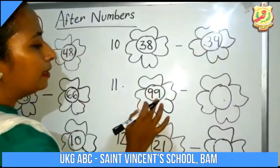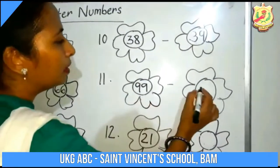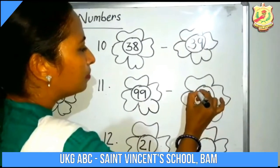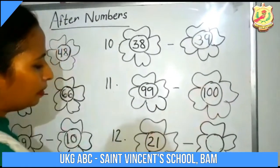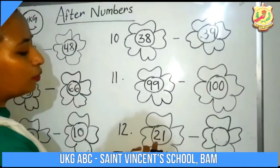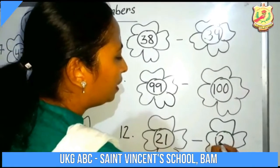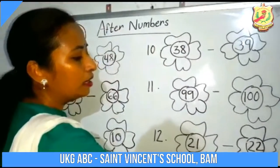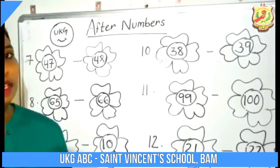The next number is 99. After 99, what comes? The number 100. Then 21 — the last number is 21. After 21 is 22. Children, hope you all have clearly understood the after numbers and how to write the after numbers.